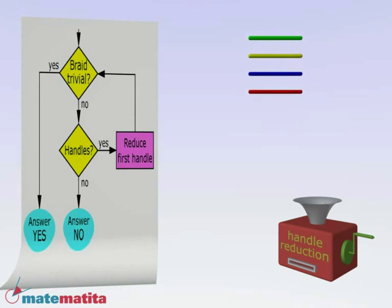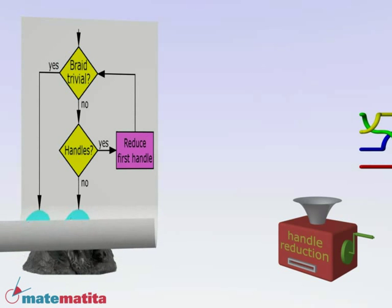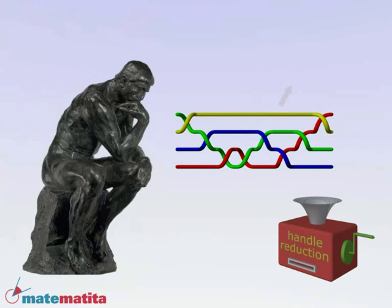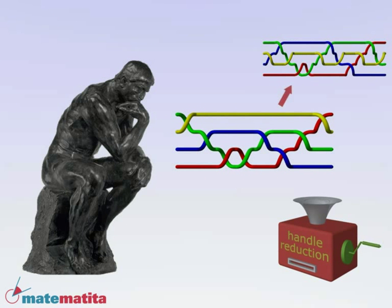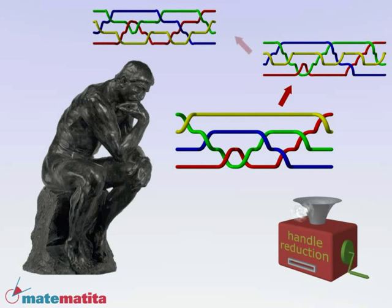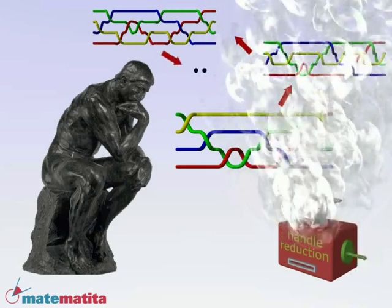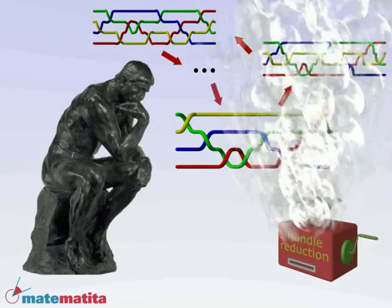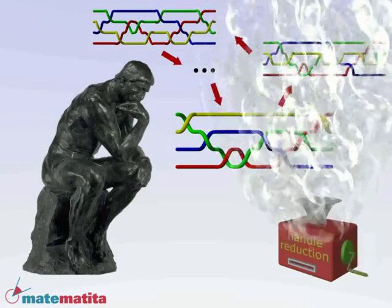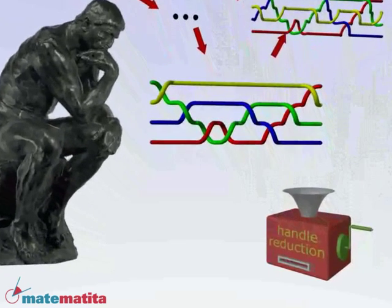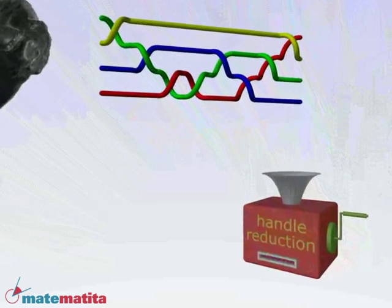But there is a problem. What if the algorithm does not end? It could maybe go into a loop. If it comes back to a word that it has already met, the steps after that one will always be the same and the algorithm will never stop. In fact, this is never the case. It has been shown that the algorithm always terminates.